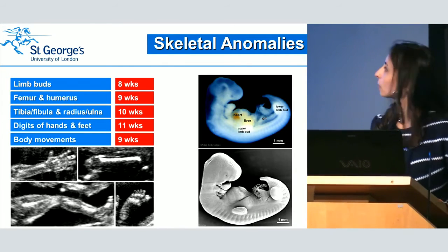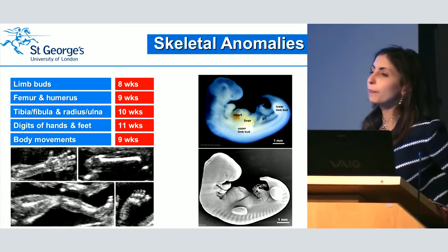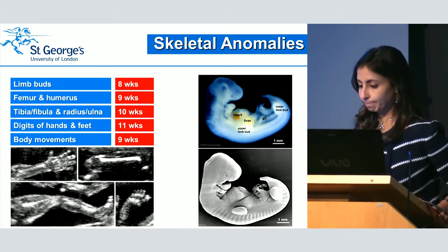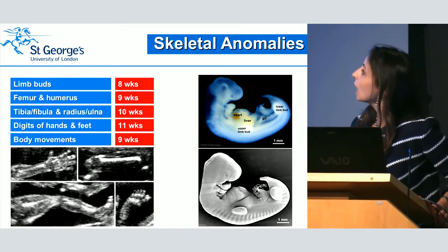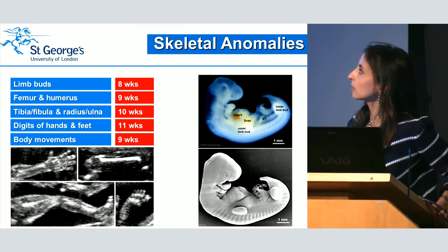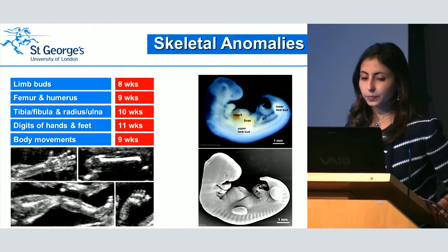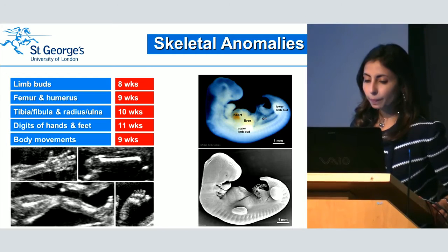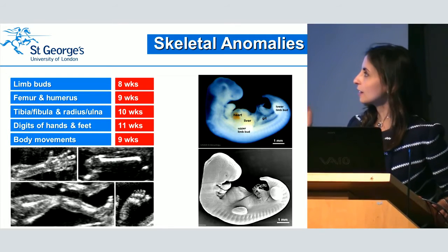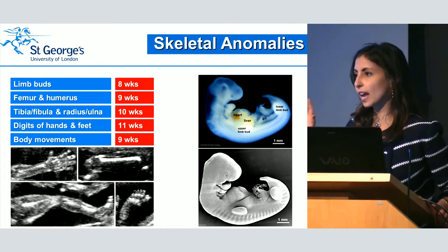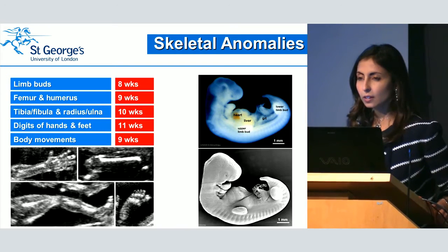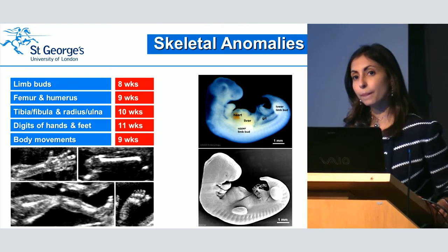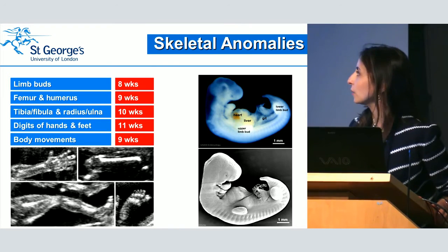So what's the normal? You expect to see the limb bulge by ultrasound scan from eight weeks. You expect to see the femur and humerus by nine weeks. The tibia, fibula, and radius by 10 weeks. You expect to be able to see the digits of the hands and the feet by 11 weeks. And you should expect to see body movements by nine weeks.